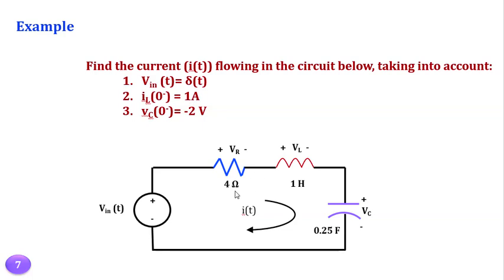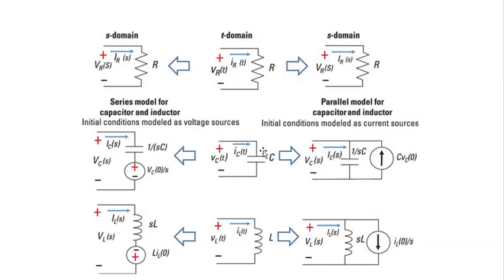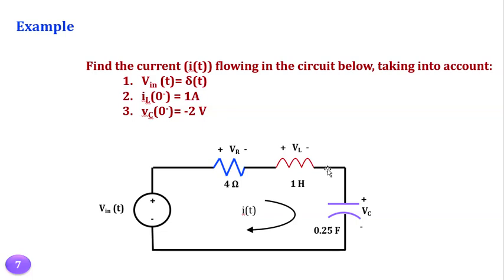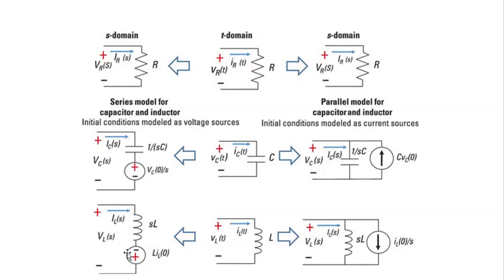Redraw the circuit using either the parallel mode or the series mode from the table. Since the circuit is in series, I think it's better to use the series models. You should add a voltage source for the capacitor and a voltage source for the inductor. From the table, the voltage source value for the capacitor will be Vc₀/s, and for the inductor it will be L·I₀. Then you can analyze the new circuit.